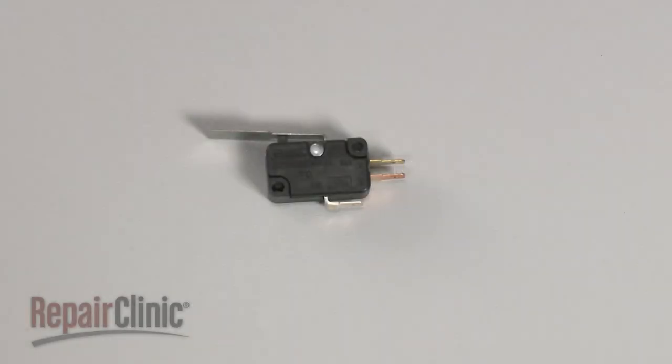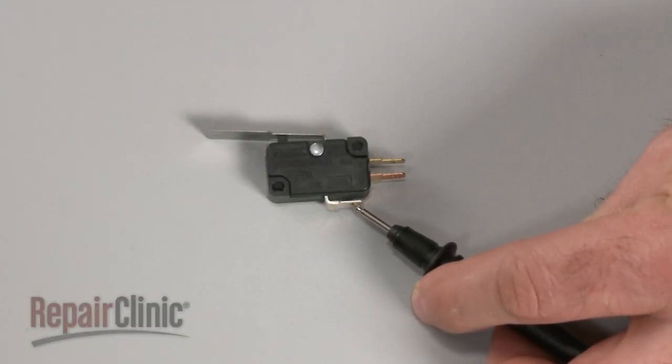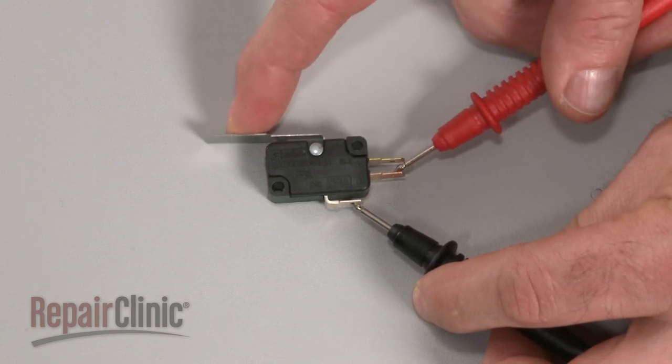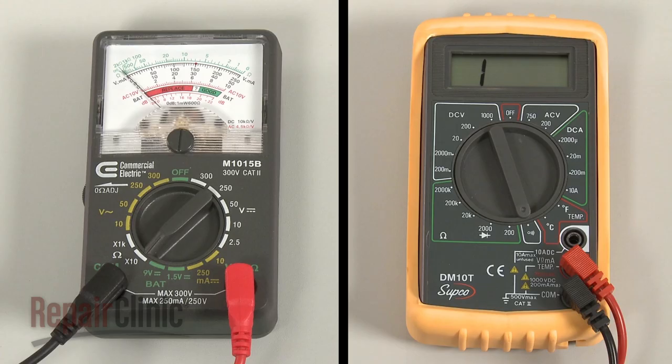To test the switch, use a probe to touch the common terminal, and the second probe to touch the normally open terminal. Now actuate the switch. If the meter reading shows zero ohms of resistance, the switch has continuity.